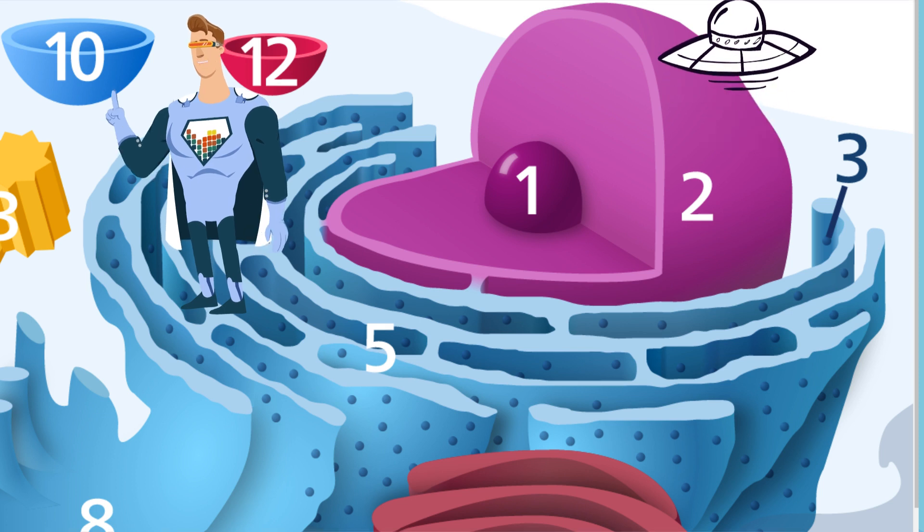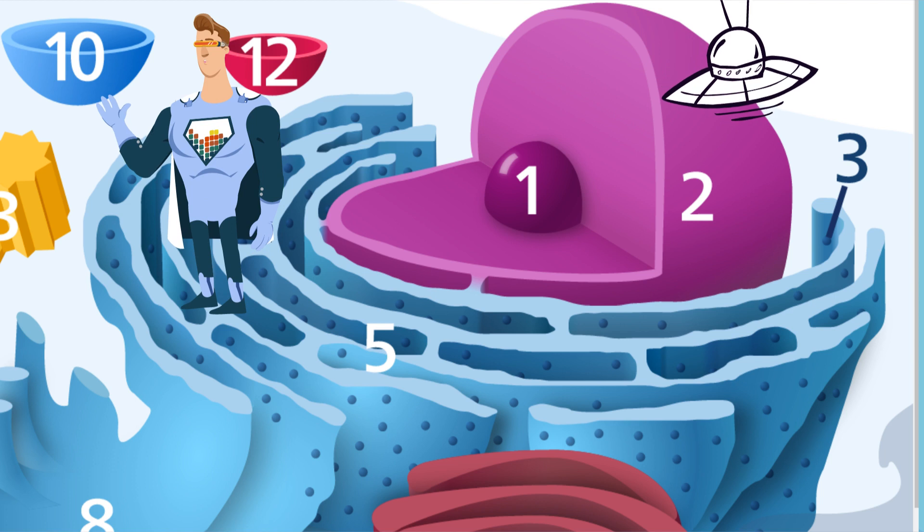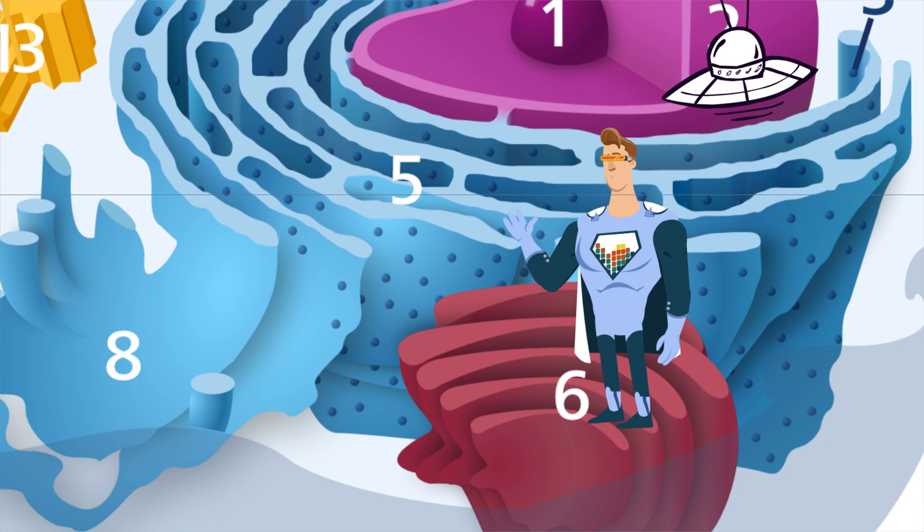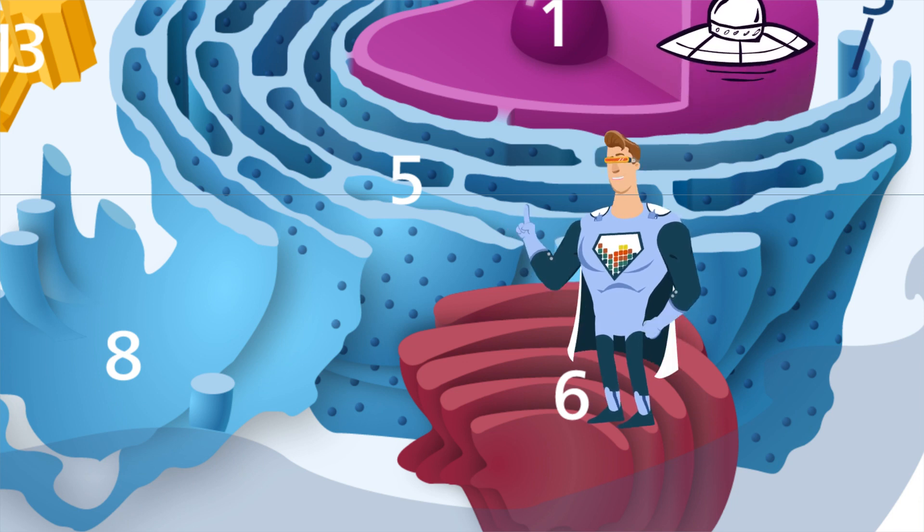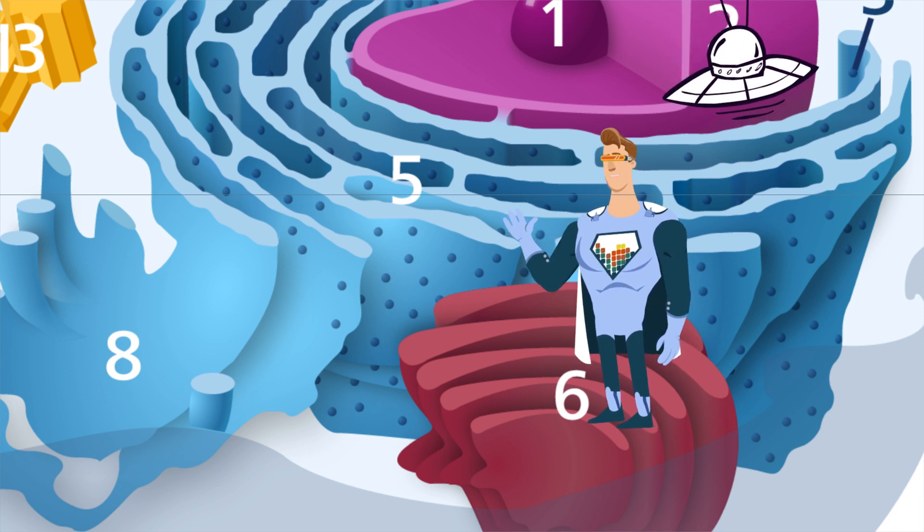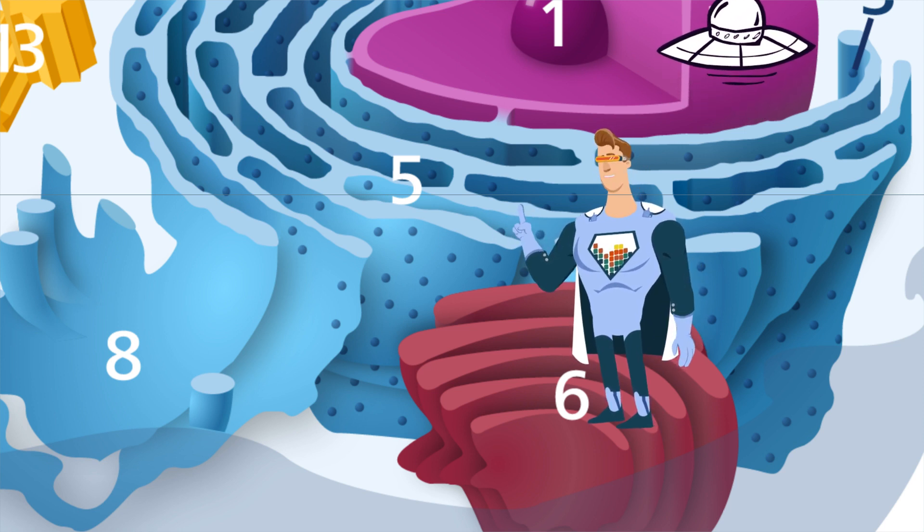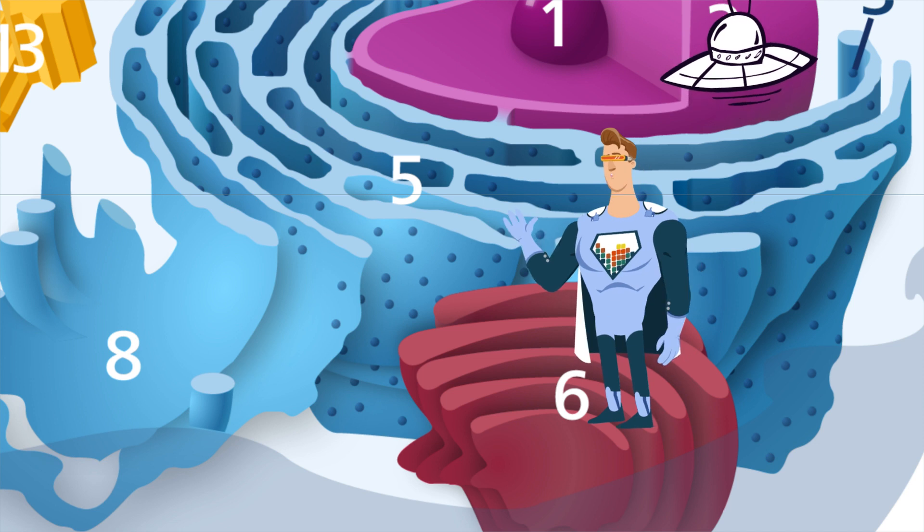One place the ER delivers materials to is the Golgi complex. It is the red object I'm standing on. The Golgi complex repackages items and then sends them into a vesicle which go out to different parts of the cell.